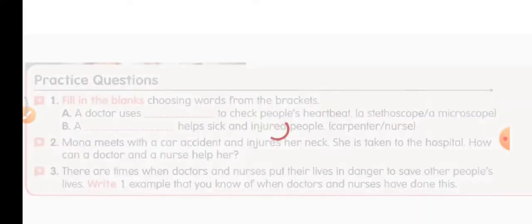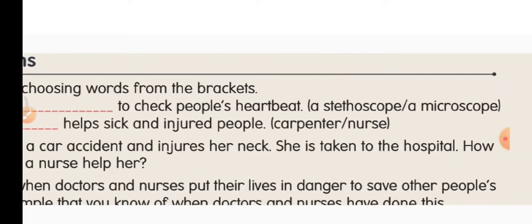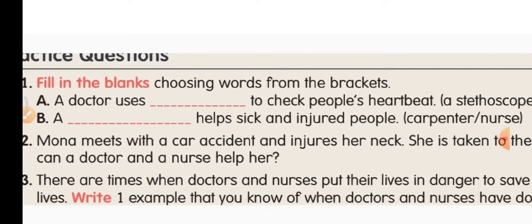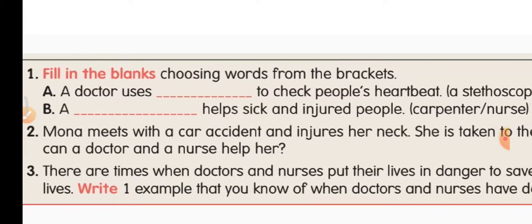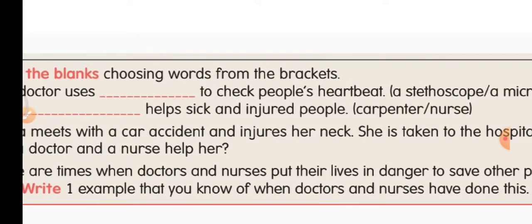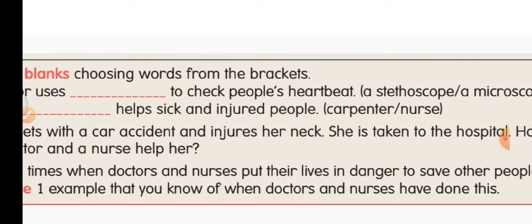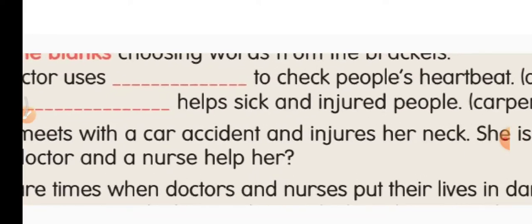Open your content book and put today's date next to the practice questions. First, fill in the blanks choosing words from the brackets. A: A doctor uses a stethoscope to check people's heartbeat — put a tick on stethoscope and write it in the blank. B: A nurse helps sick and injured people — a carpenter makes wooden furniture, but a nurse helps sick and injured people, so write the spelling nurse.